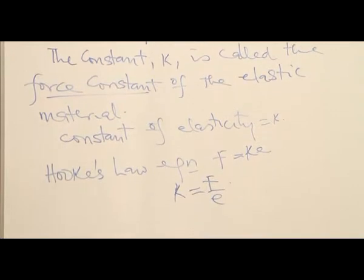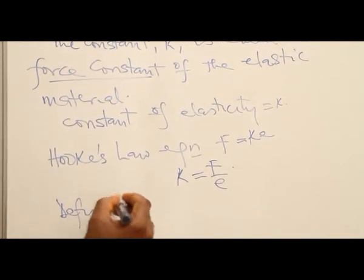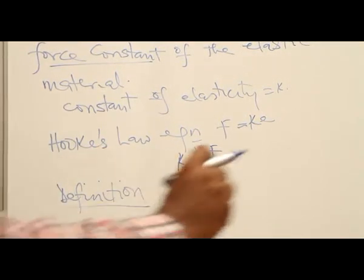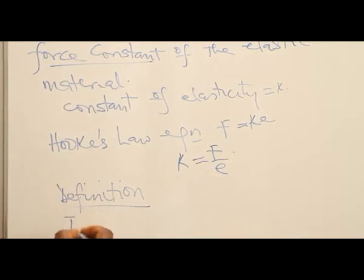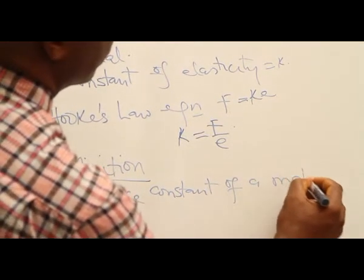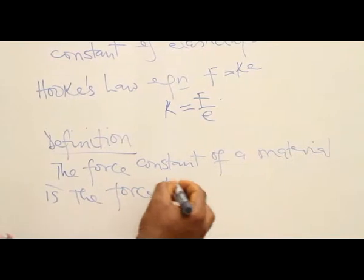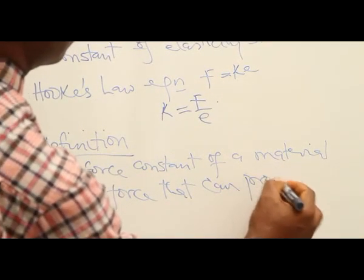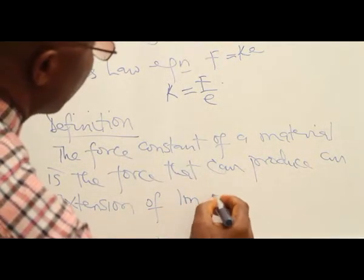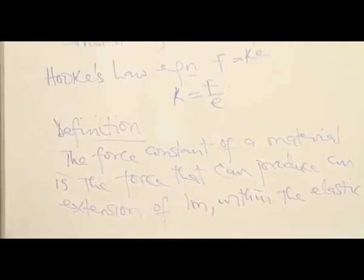So we can define force constant of an elastic material as the force that can produce an extension of one meter in a material. The force constant of a material is the force that can produce an extension of one meter within the elastic limit of the material.